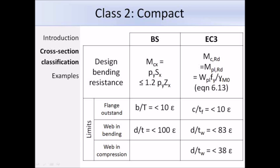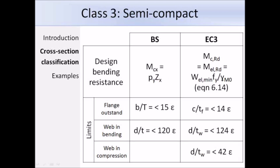For class 3, the limits between BS 5950 and Eurocode 3 are slightly different — approximately 151, 14, 120, 124 — but not a major change. Unlike class 1 and 2, which use the plastic design resistance M_pl,Rd, class 3 sections use the elastic design resistance M_el,Rd. The design bending resistance for a class 3 section is the elastic modulus times the yield strength divided by a partial factor; this is expression 6.14 in Eurocode 3.